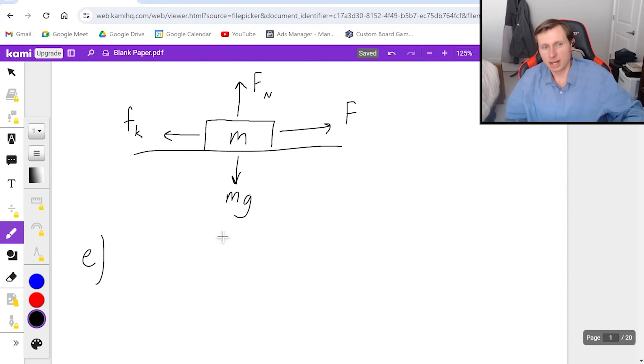And then just one more for you, I promise. Part E, we're going to move this box to an ice rink. And if you can't get this one right, then I'm worried for you.